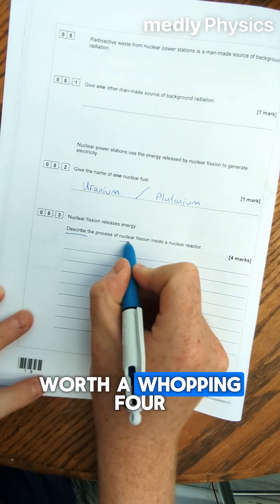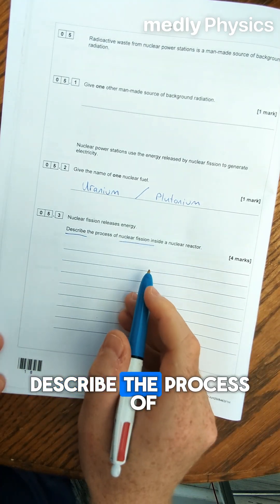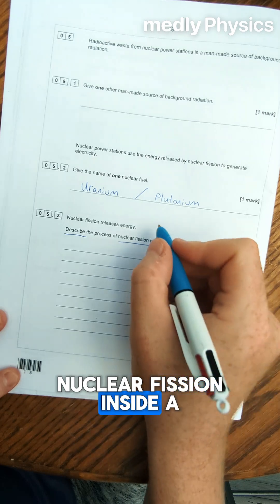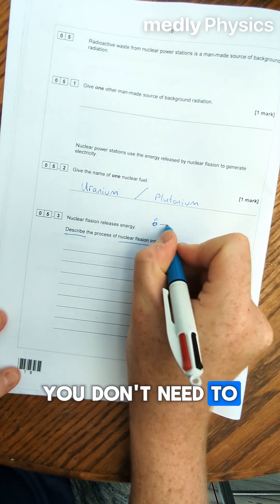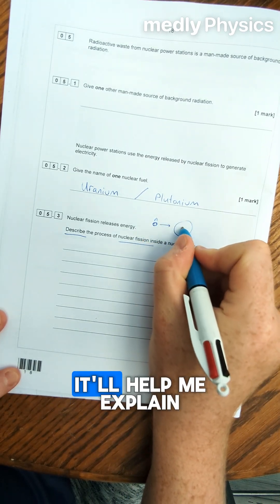The main question that's worth a whopping four marks says describe the process of nuclear fission inside a nuclear reactor. You don't need to draw a diagram for this but I'm going to because it will help me explain it.